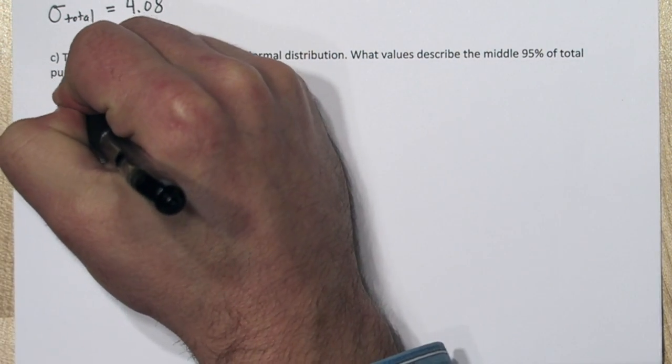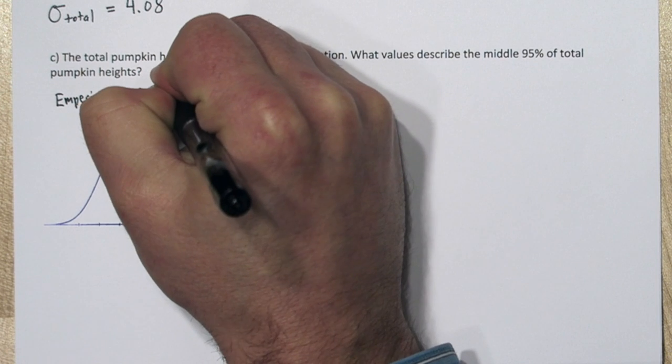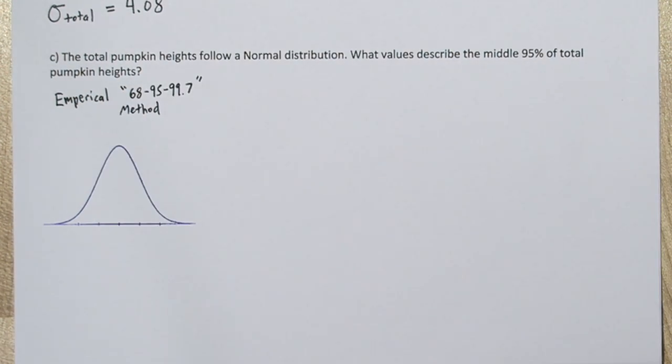There's actually two ways to do part c. So one way to solve this is with the empirical rule, or the 68-95-99.7 rule. If we use this rule, it says 95% of our total pumpkin lengths will be within two standard deviations of the mean.